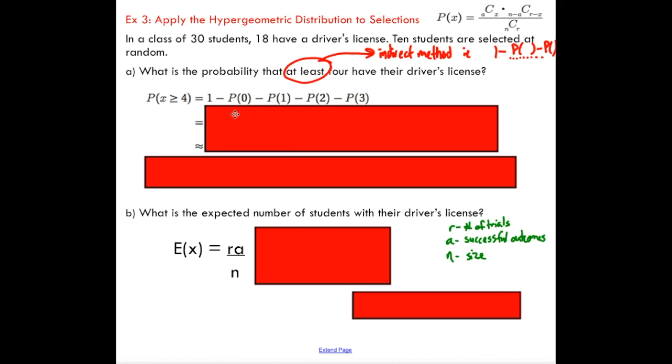So we do have to fill in our formula here. We're going to start with one and subtract the probability of getting zero students that have their driver's license. Remember, we're counting successes—a student having their driver's license is a success, and that's what A represents. Our total number of successes possible is 18. We're going to choose zero because we want none of our students to have driver's licenses.